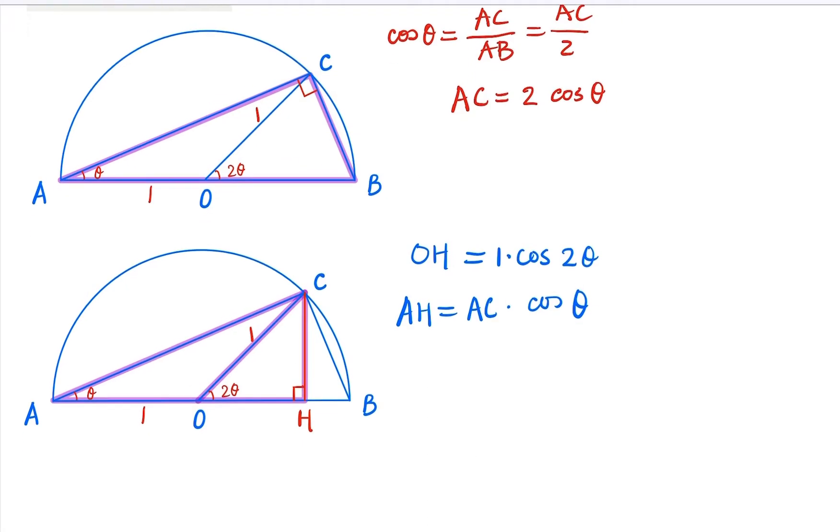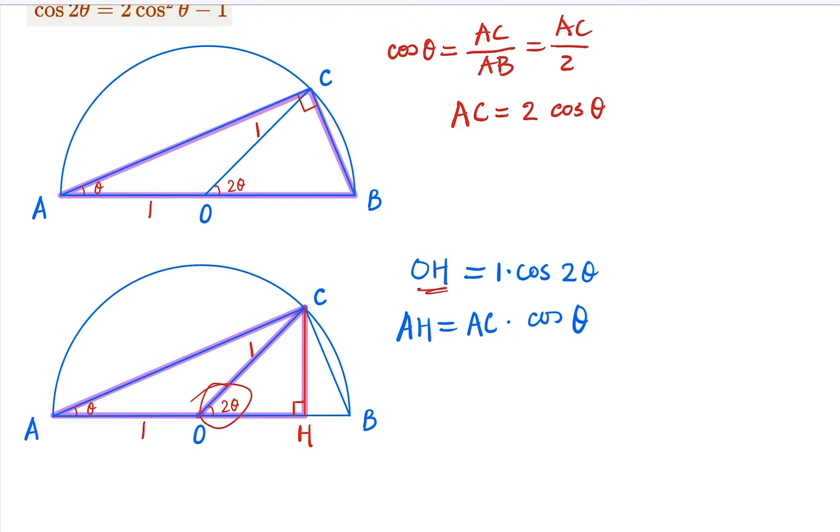From the second diagram, notice that this is 2θ here. So we have this OH and AH related to cosine θ and cosine 2θ.